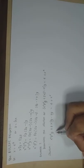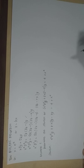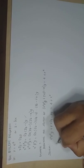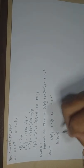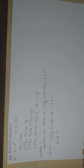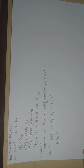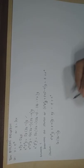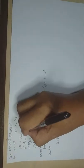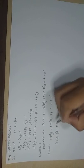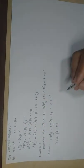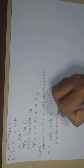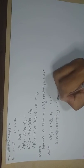Now, x²D² is equivalent to Dz(Dz − 1), so we have Dz(Dz − 1)y. And x·Dy is equivalent to Dz·y, so we have plus 2·Dz·y minus 2y equals 4 + x².